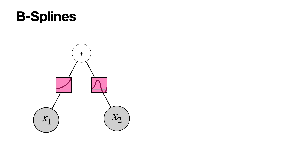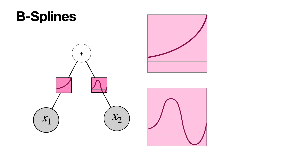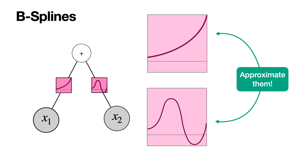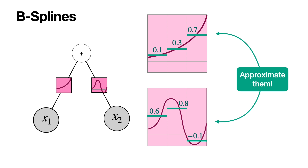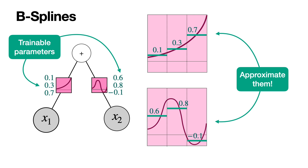Let's say the optimal functions for a node are these two functions. We're going to approximate them by cutting the interval into three equal parts and finding simple piecewise functions. For the first function, I get three segments at heights 0.1, 0.3, and 0.7. For the second, three segments at heights 0.6, 0.8, and minus 0.1. These approximations are described by just three numbers each — 0.1, 0.3, 0.7 for the first and 0.6, 0.8, minus 0.1 for the second — giving us six trainable parameters total.